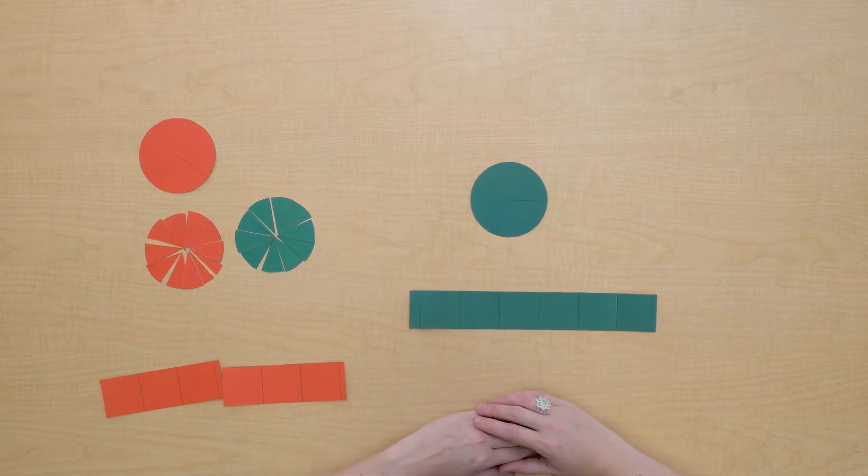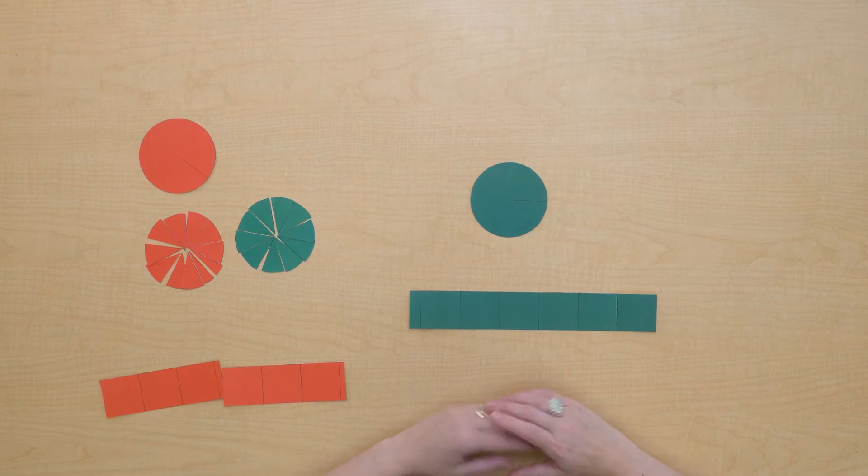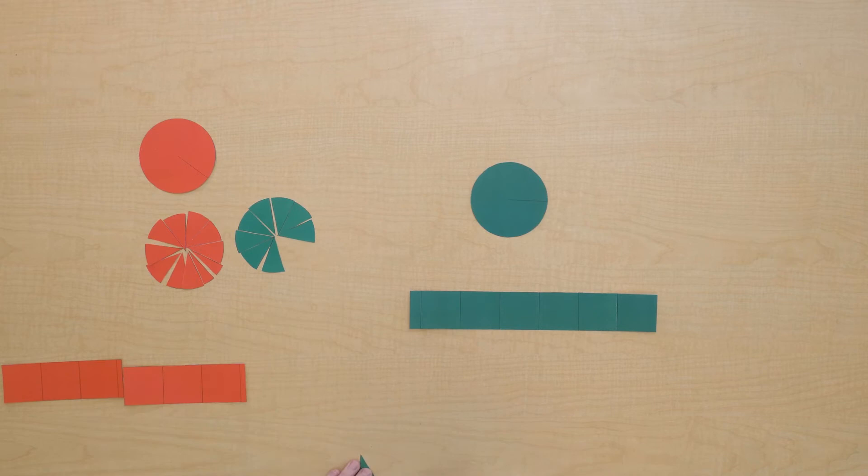Well, I have a rectangle here. Let's see if we could take this divided circle and turn it into a rectangle.